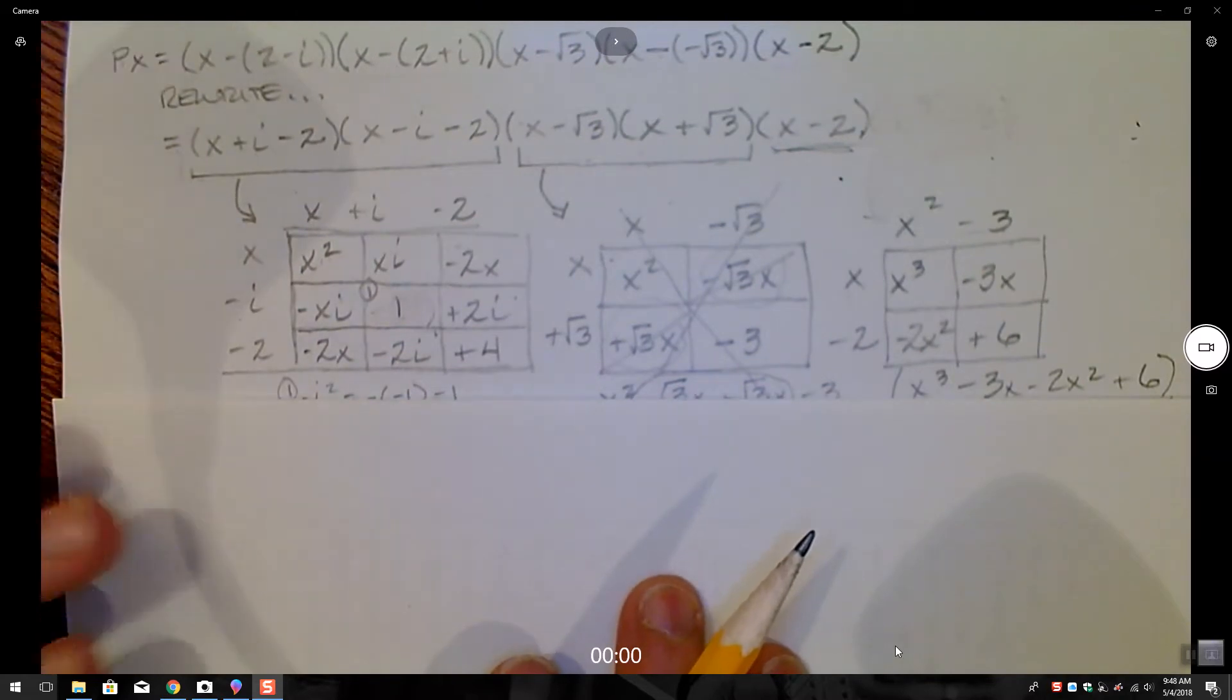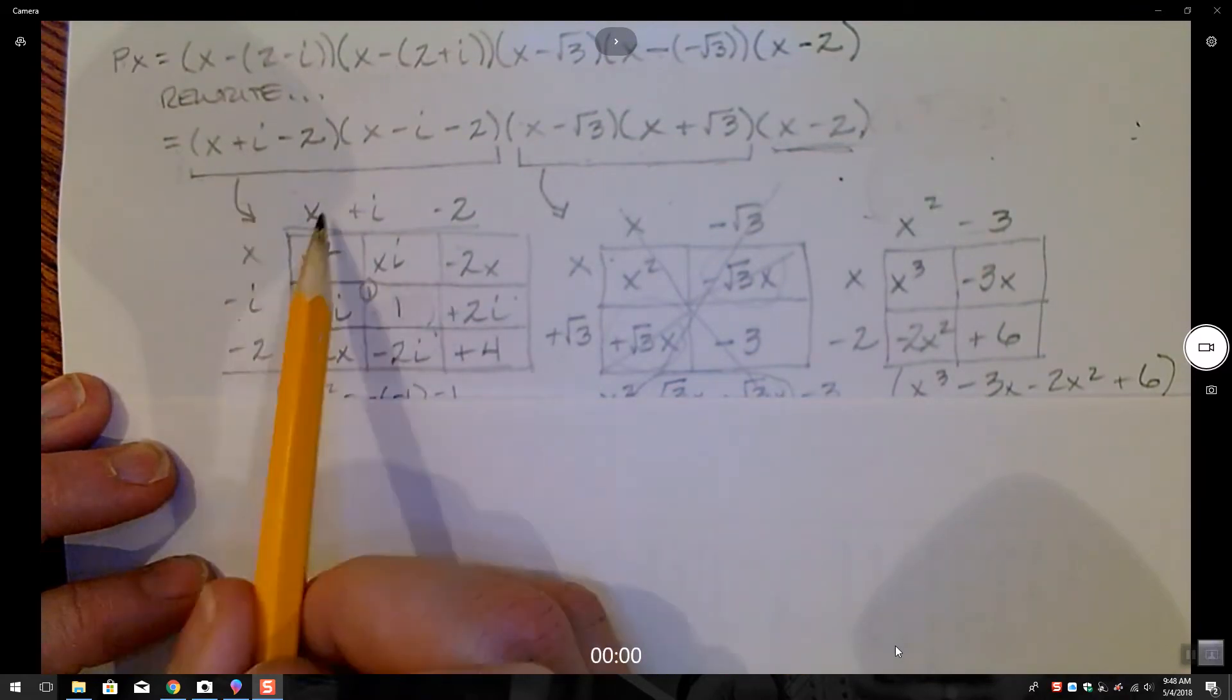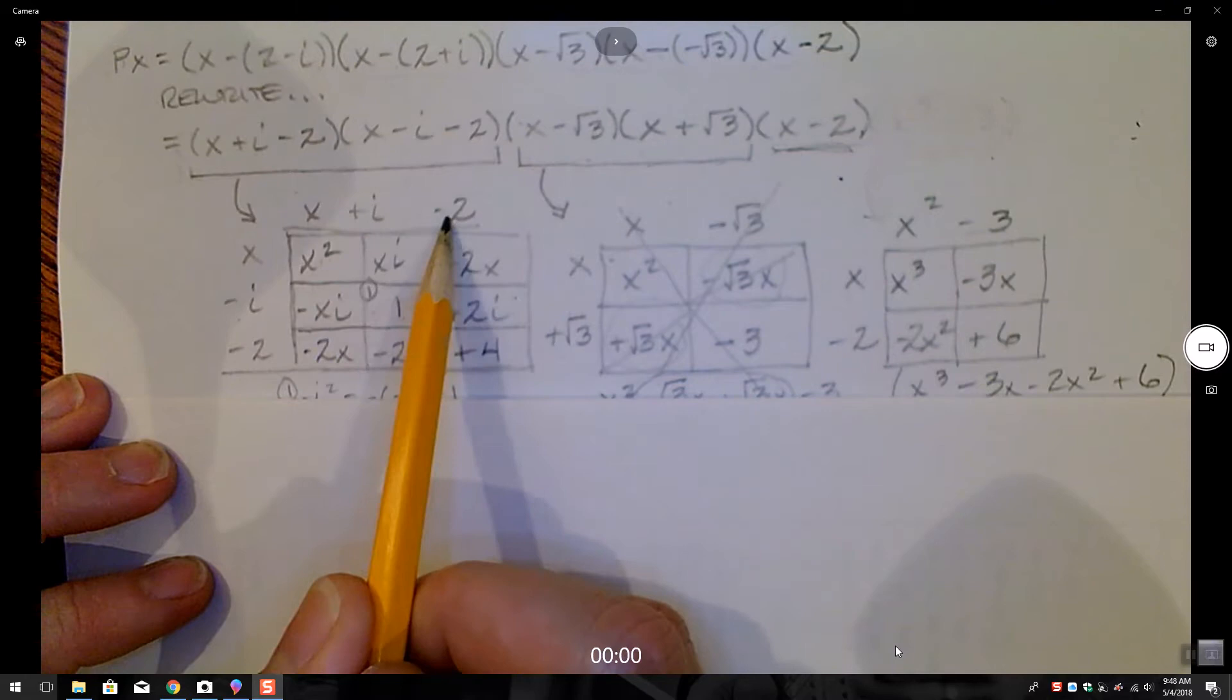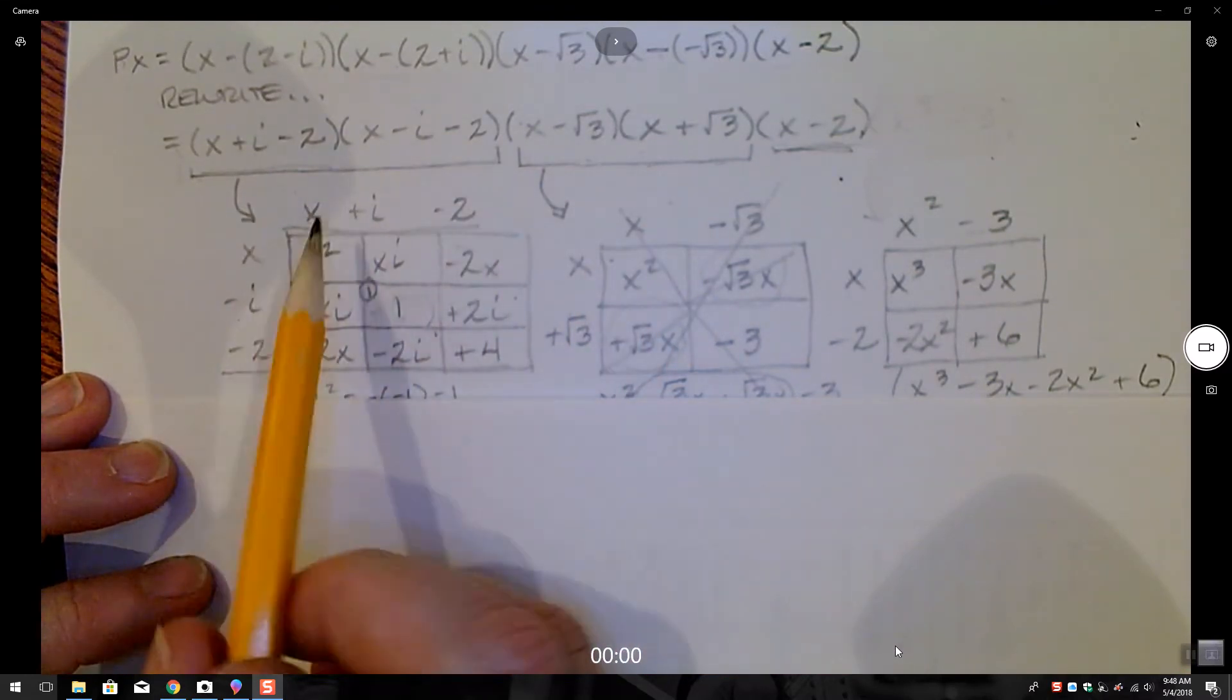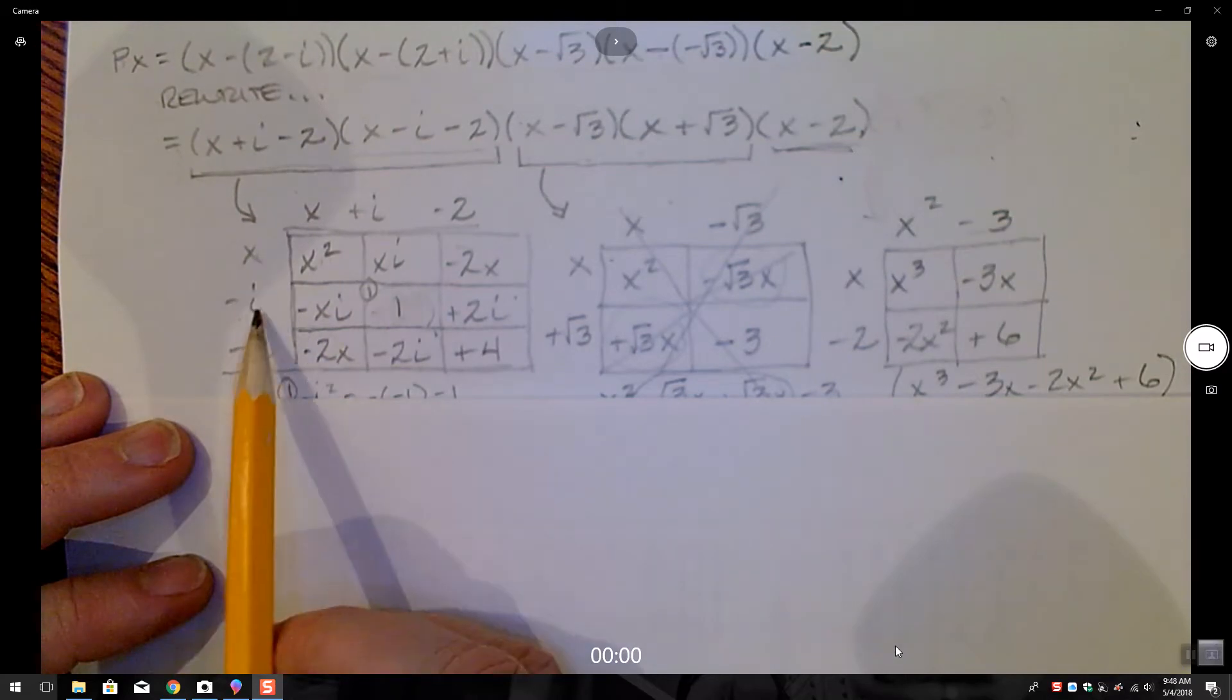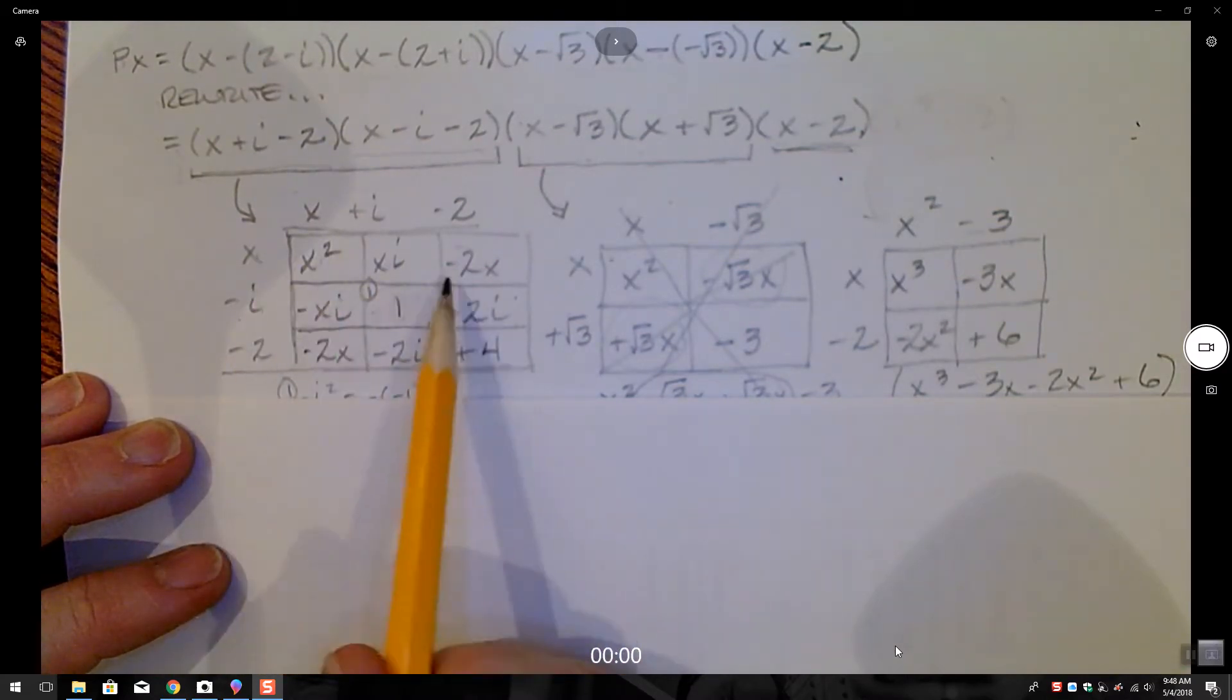I've used the tabular method. I have the x plus i minus 2 on the top, could be on the side, but I put it on the top, and I have this factor here on the side, x minus i minus 2, and I have combined them to come up with these nine factors.